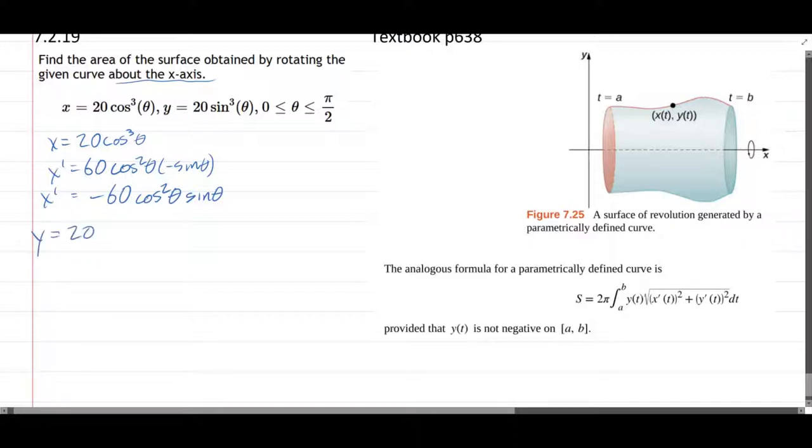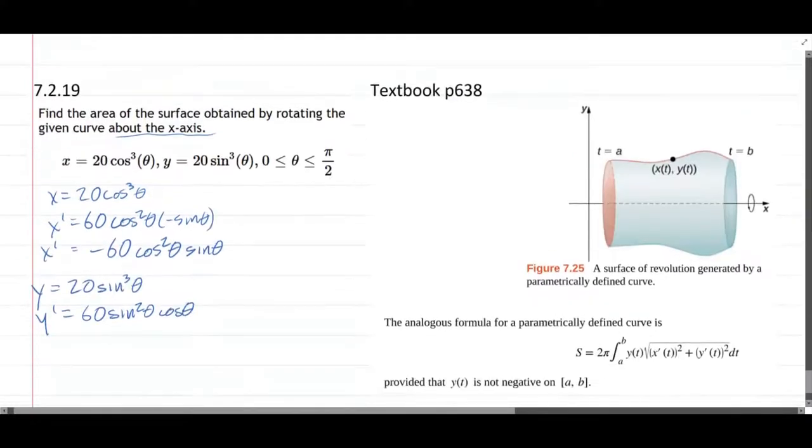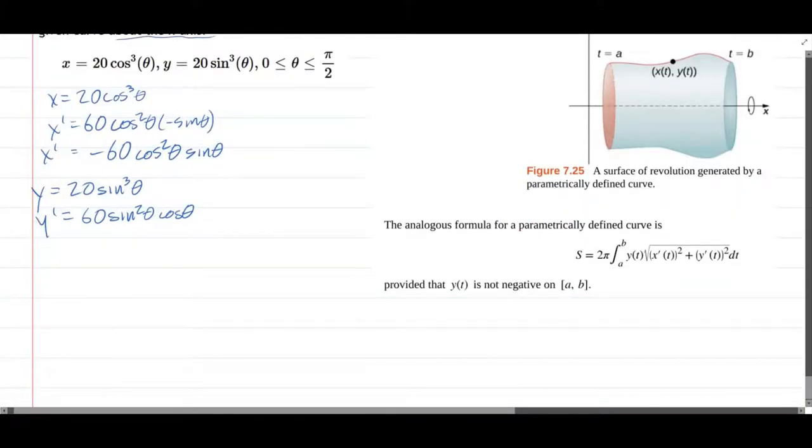y is 20 sin³θ. y' is 60 sin². Derivative of sine is cosine. So there's our y', now ready to make our substitutions.